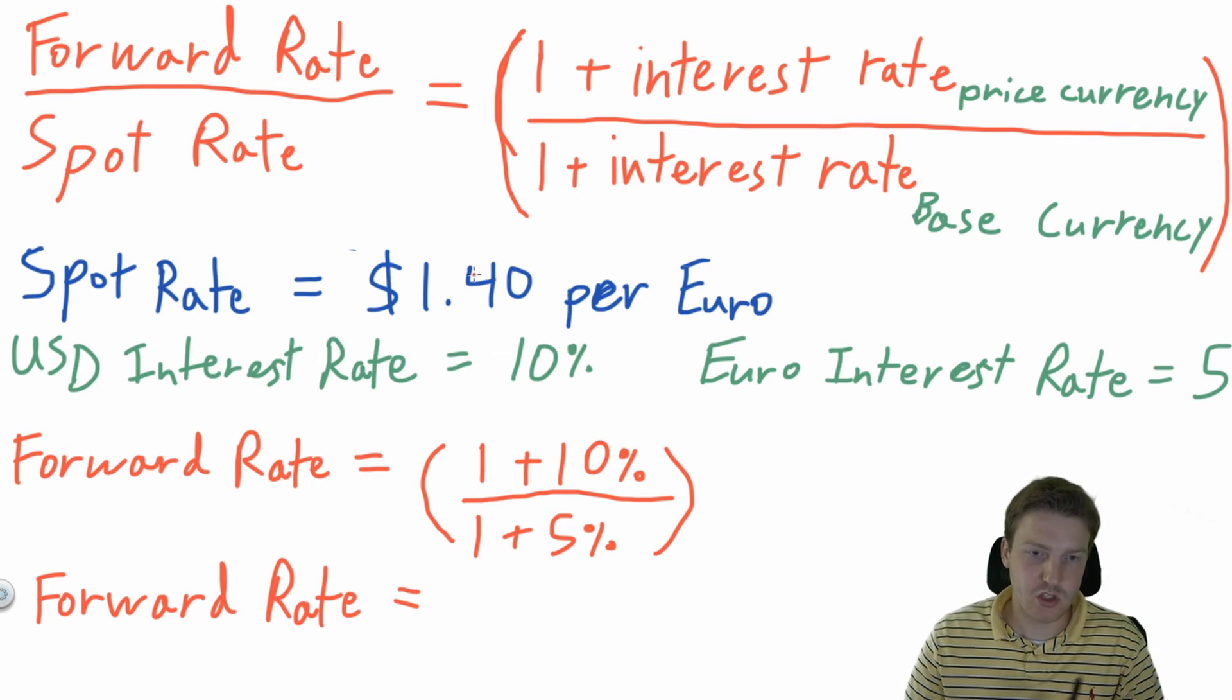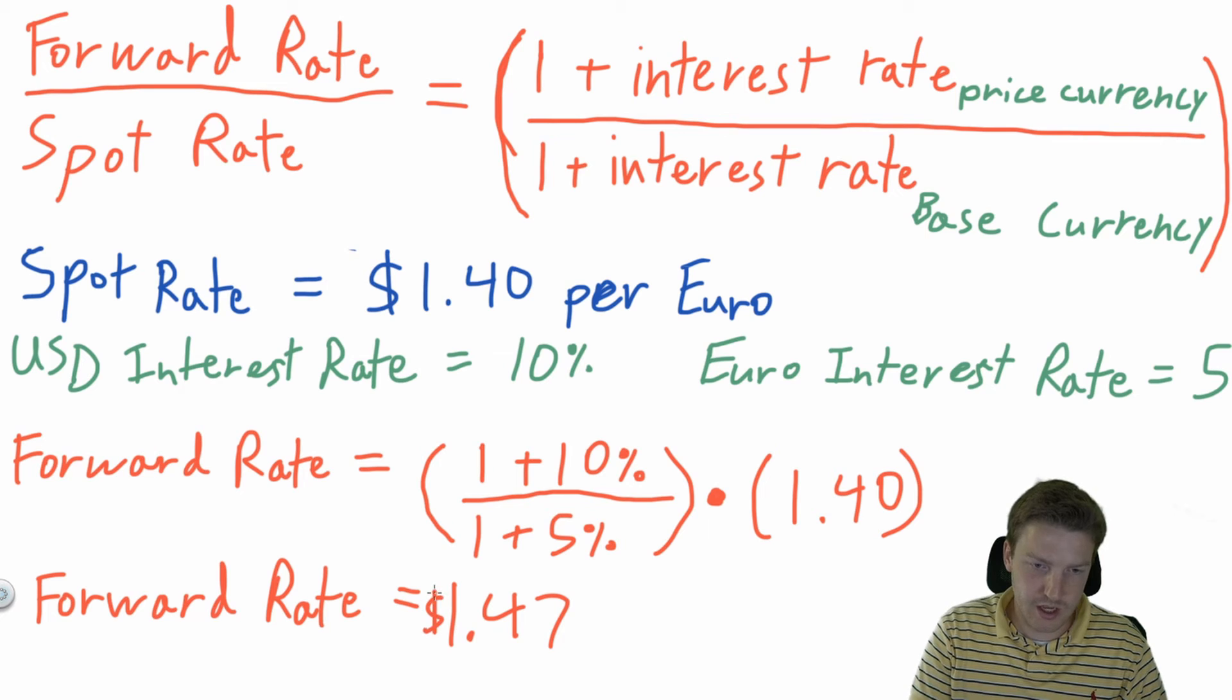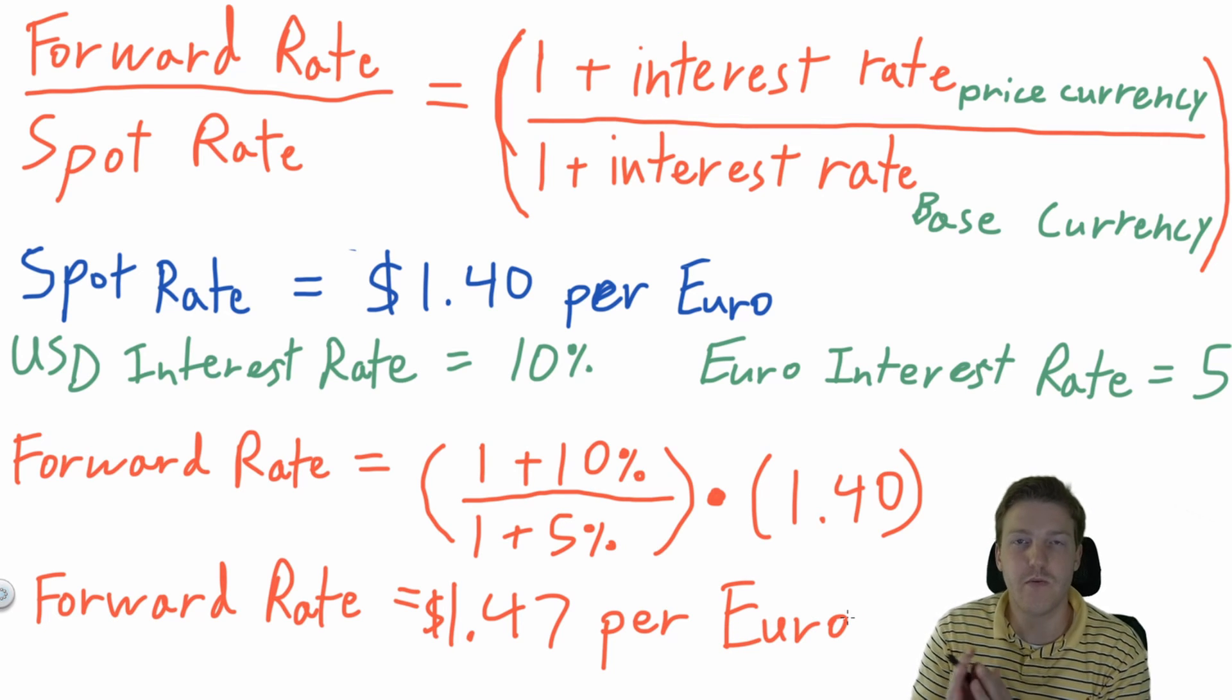And when we multiply the left side by the spot rate, it just gets canceled out and we're left with only the forward rate. And then the other side is multiplied by the spot rate, which is $1.40. When we solve this whole equation, we're given that the forward rate is $1.47 per one euro. So that is how you solve for a forward rate based on the spot rate using interest rate parity.